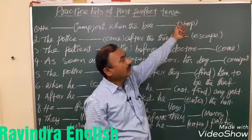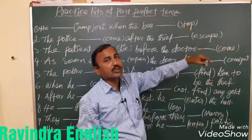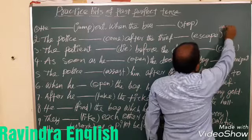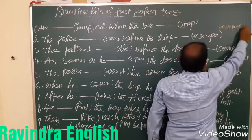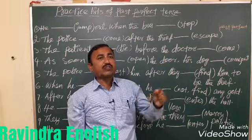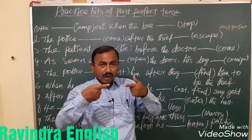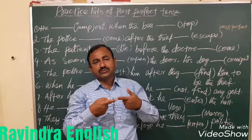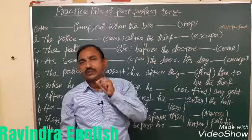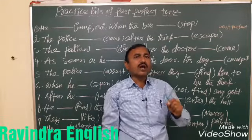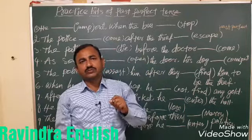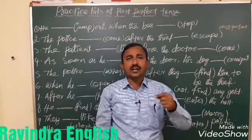Whatever work was completed earlier, that goes in past perfect tense. When we use past perfect tense — for example: 'Before I got a job, I had worked in private schools.' Before I went to hospital, the doctor had left. Before I went to the railway station, the train had left.